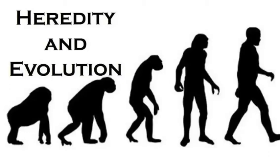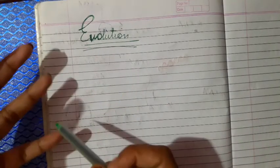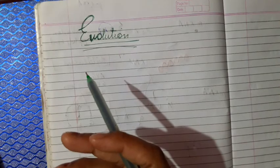Chapter 1: Heredity and Evolution includes the second most important topic, which is evolution. Now let us see what evolution is. Evolution is nothing but a gradual change occurring in living organisms over a long duration. It is a very slow process through which the development of organisms is achieved — a very slow change which keeps on occurring for a very long duration.